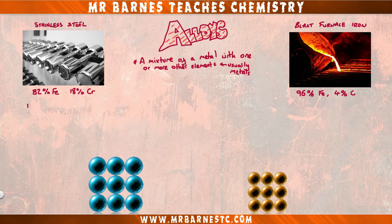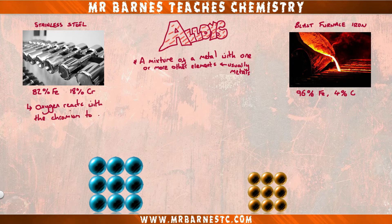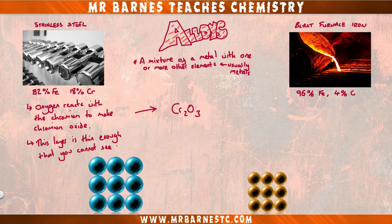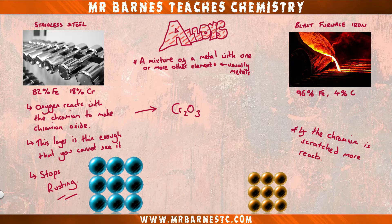The reason we alloy is it gives metals different properties to pure metals. For example, in stainless steel the oxygen will react with the chromium instead of the iron, and it will make a layer of chromium oxide. This layer is thin enough that you can't see it, so it stops rusting. And even if the chromium is scratched, more of the chromium will react, stopping any further rusting from occurring.